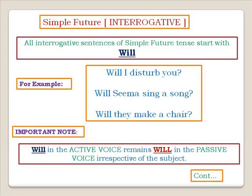For simple future interrogative, all interrogative sentences of simple future tense start with 'will.' Examples: 'Will I disturb you?', 'Will Sima sing a song?', 'Will they make a chair?' The point to note is that 'will' in the active voice remains 'will' in the passive voice, irrespective of the subject — whether it is I, we, you, they, he, she, it, or any singular or plural subject.